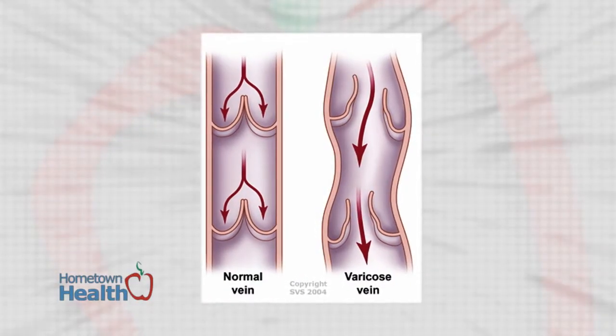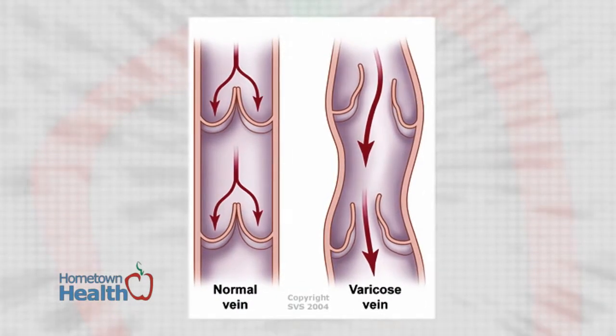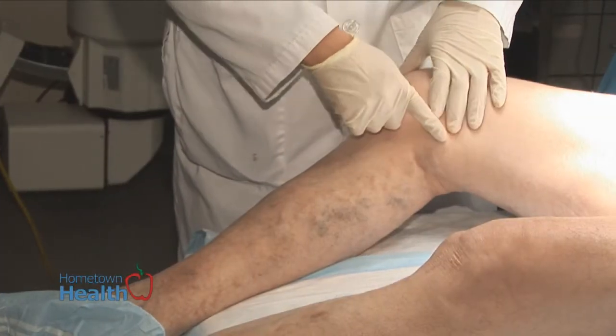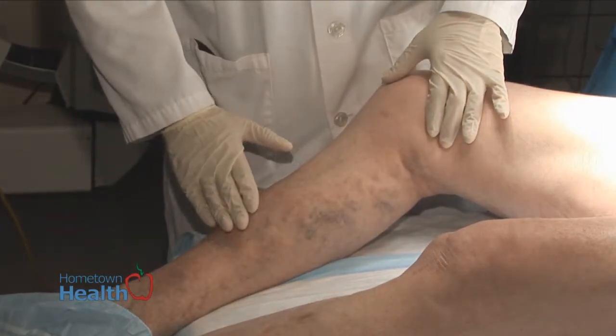For varicose veins, they tend to be superficial. Those blood clots tend not to travel. Varicose veins can cause blood clots in them, and then they cause a tremendous amount of pain once the blood in them becomes clotted — we call that thrombophlebitis. The larger they get, they tend to pull more blood, which causes skin changes and color changes around these large varicose veins.